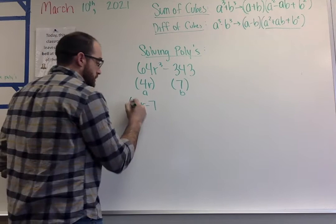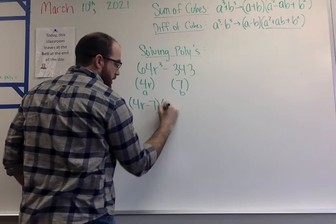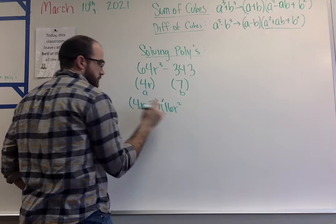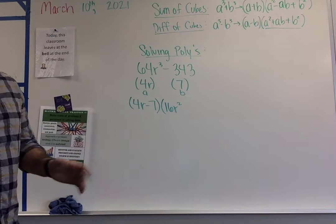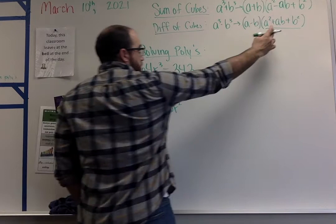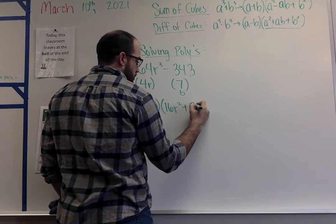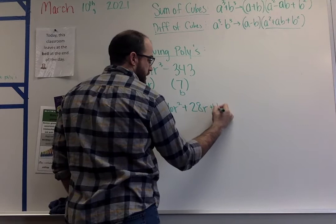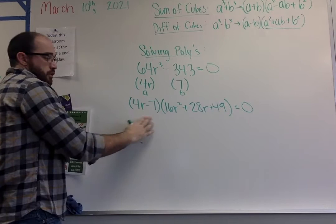So I will plug this into my formula. I've got (4r - 7). Then I have to do A². So A value is 4r. So if I squared 4r, it would be 16r². Most common thing that I see is people forget to square the 4. Make sure you're also including that. Our middle term says plus AB. So A times B, 4 times 7 is 28r. And then B², which makes it 49. This is all equal to 0.